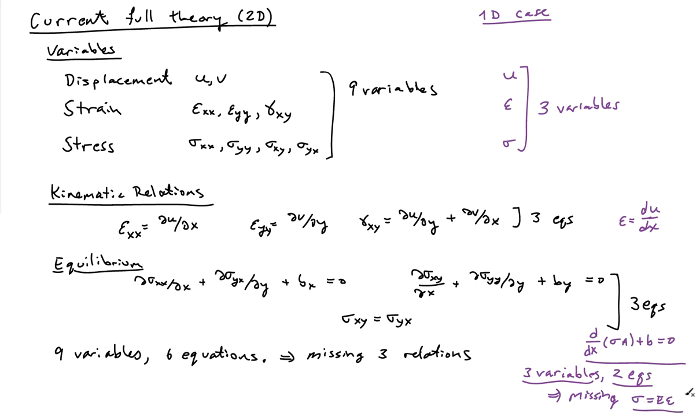And so there are three variables and two equations. And the missing equation that completed our set before was the constitutive equation, namely that sigma is equal to E epsilon. And that's essentially what we're going to need here in the full multidimensional theory - the missing relationships are going to be constitutive relations.